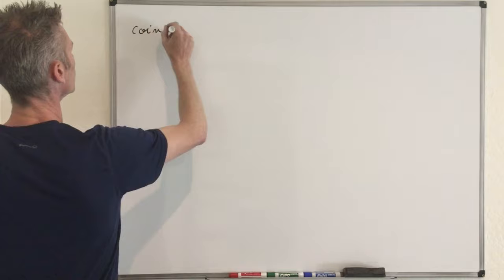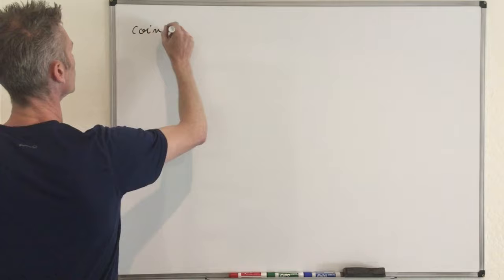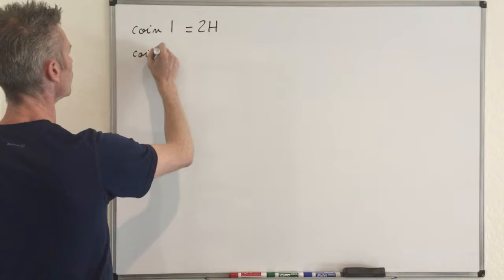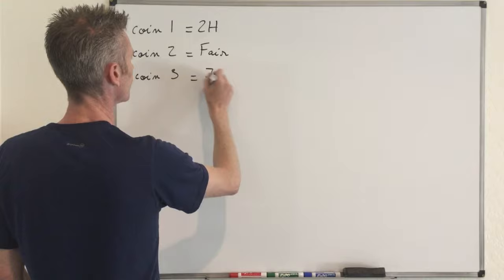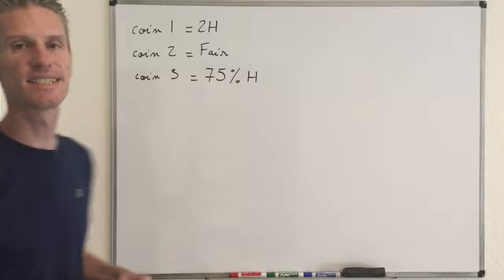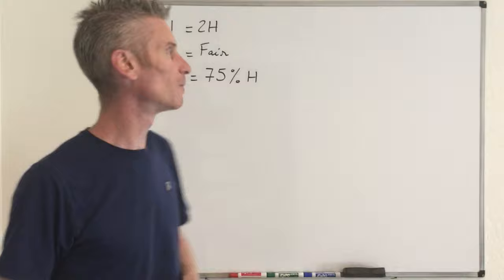So let me write those informations here. Coin one is two-headed. Coin two is a fair coin. Coin three is a biased coin — 75% heads — that will give you heads 75% of the time.